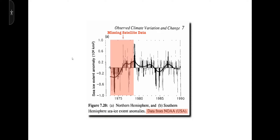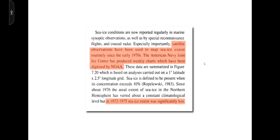Now let's look at the data which is being hidden. This graph is from the 1990 Intergovernmental Panel on Climate Change report. It shows Arctic sea ice extent all the way back to the early 1970s. And as you can see, extent was much lower prior to 1979. In fact, 1979 was the peak. The data was taken from the National Oceanic and Atmospheric Administration.